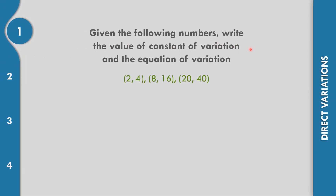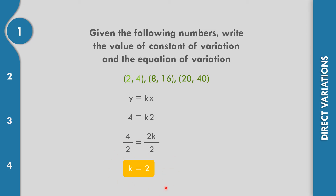Given the following numbers, write the value of the constant of variation k and the equation of variation in the given: 2, 4, 8, 16, 20, 40. So 2, 8, and 20 are the values of x, and 4, 16, and 40 are the values of y. The equation is y equals kx. Let us replace any of the points. The value of y is 4, so 4 equals k times x, which is 2. Let us divide both sides with 2. Cancel 2. So 4 divided by 2 equals 2, so k equals 2. The constant of variation is 2. So replacing k by 2, the equation of variation is y equals 2x.